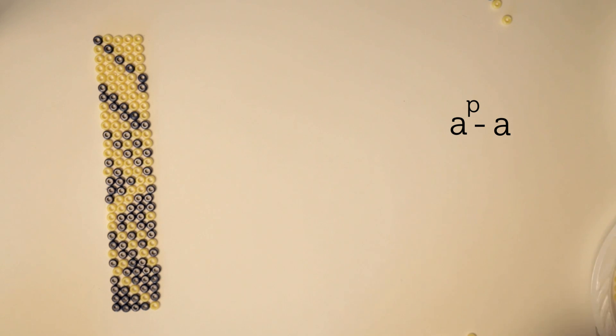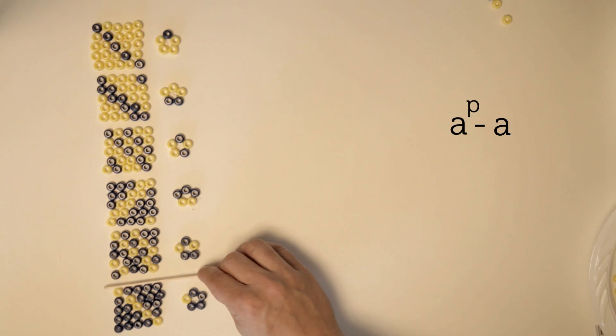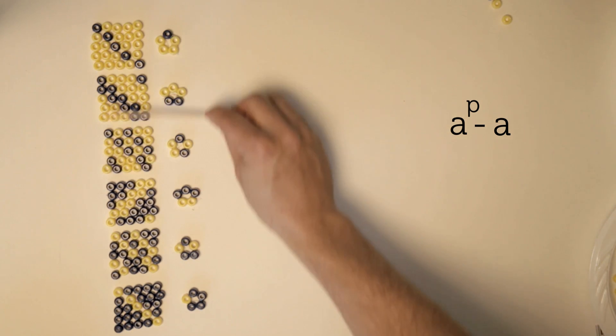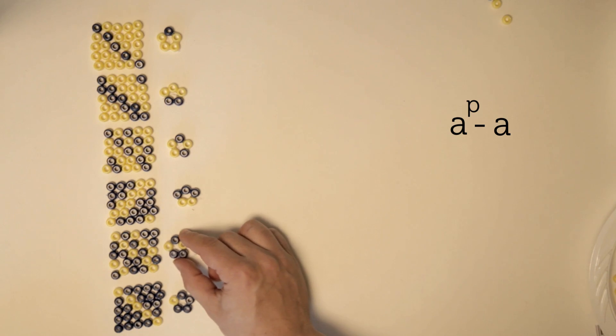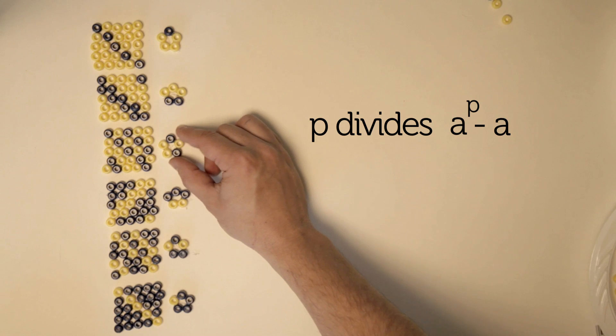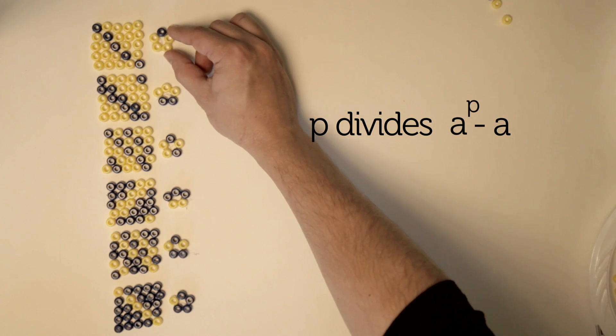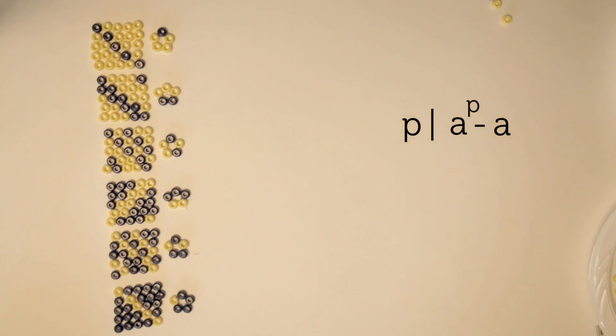When he glues these strings together, they will fall into groups of size P, since each earring must have a cycle length of P. Therefore, P divides A to the power of P minus A. And that's it.